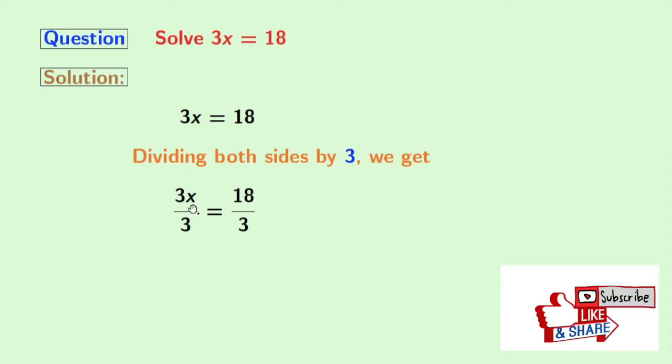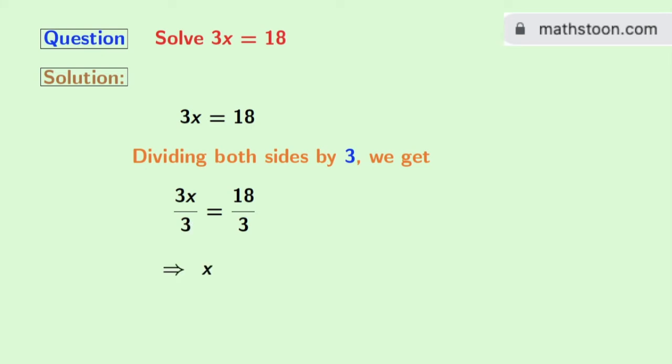Now, on the left hand side, we have 3 in both the numerator and the denominator. So, it gets cancelled and we are left with x. And on the right hand side, we have 18 by 3 which is 6. So, finally, we get x is equal to 6 as our answer.